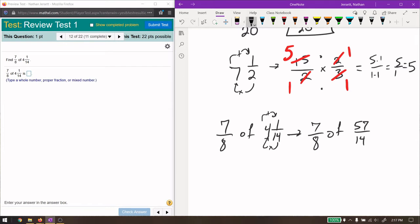If you have 7 eighths of another fraction, really all that is is 7 eighths times the other fraction. And all we have to do is reduce. 7 divided by 7 is 1. 14 divided by 7 is 2, not 1. 57 times 1. 57 times 1 is 57. And 8 times 2 is 16.